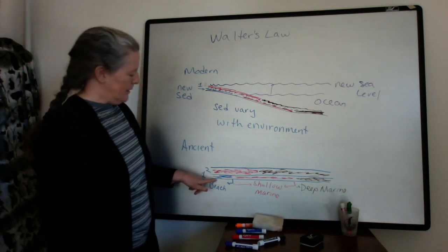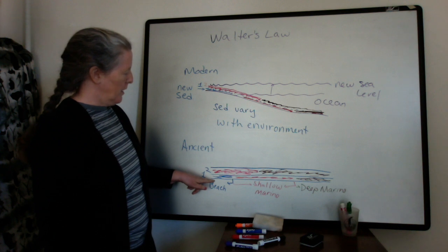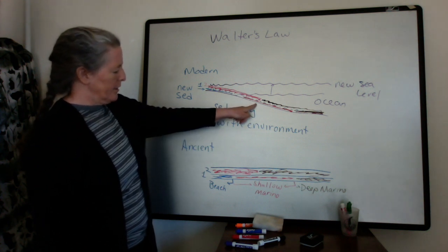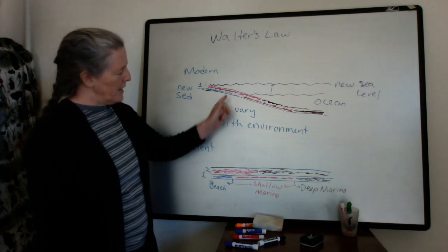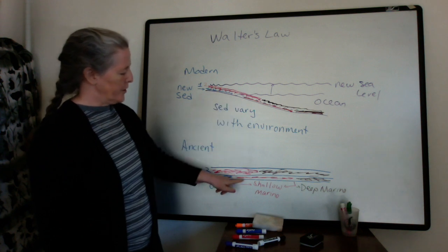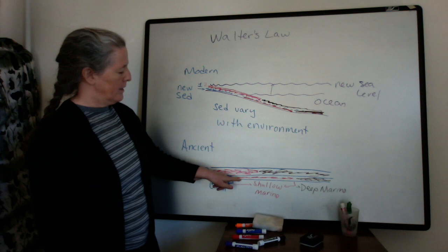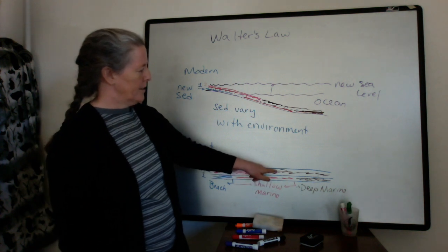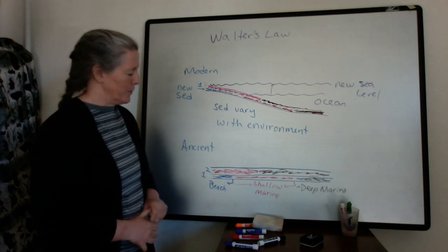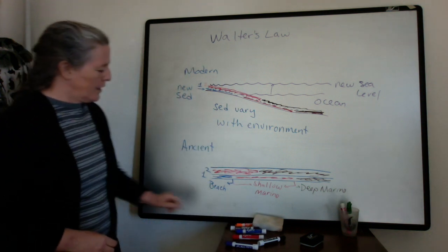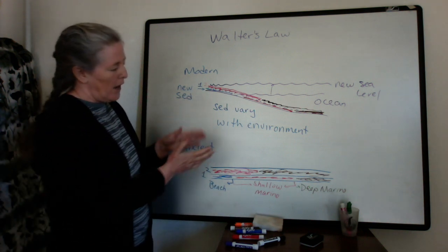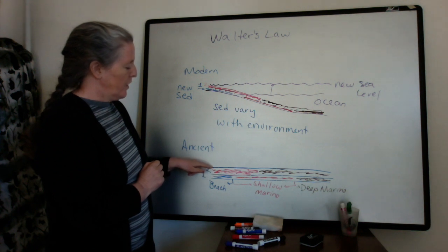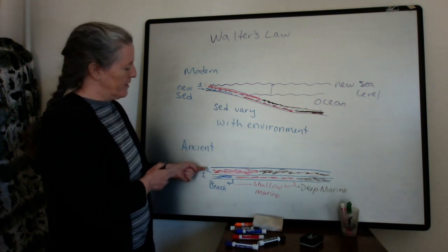Looking at our layers through time, we have a beach and then shallow marine rocks, which tells us sea level went up. In the middle area we just see shallow marine rocks, but they're actually getting deeper through time. Further out we see shallow marine then deep marine, and out at the far end we see continuing deep marine rocks. The key insight of Walther's Law is that the shifts in environment you see going vertically are the same shifts you see going laterally.